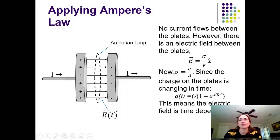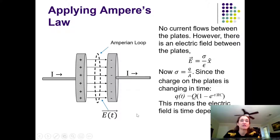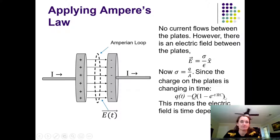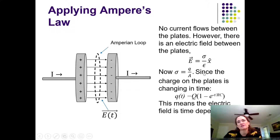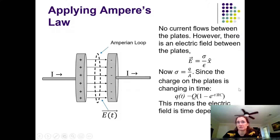Here σ equals the charge on the plates divided by the area. For a charging capacitor, the charge grows according to q(t) = Q·(1 − e^(−t/RC)). Since the charge on the plates is changing in time, and the electric field equals charge per unit area divided by ε, the electric field between the plates is time-dependent — it starts at zero and grows exponentially, just like the charge.